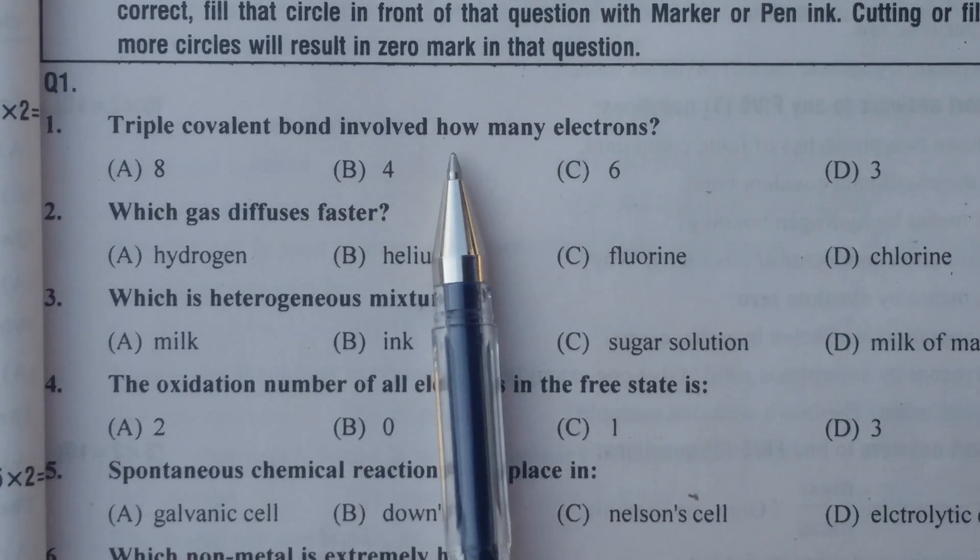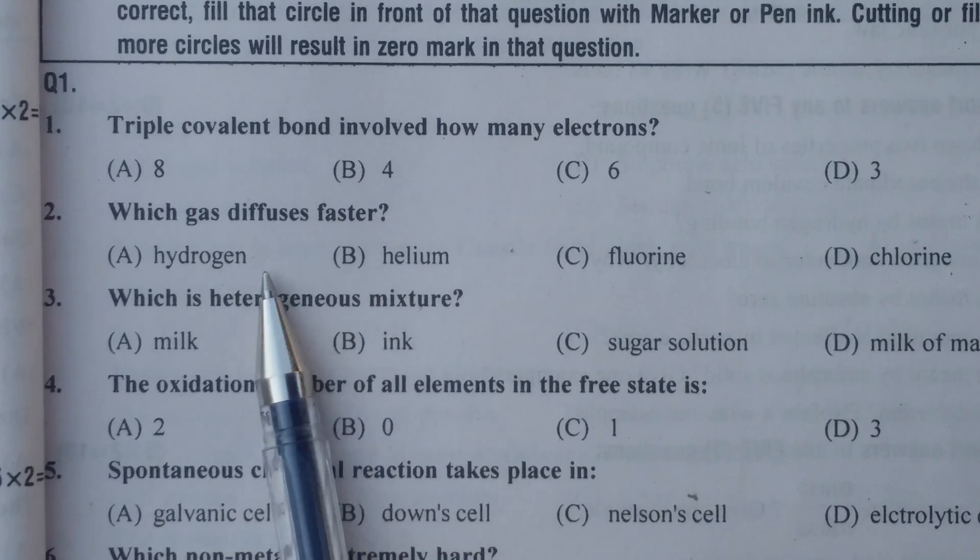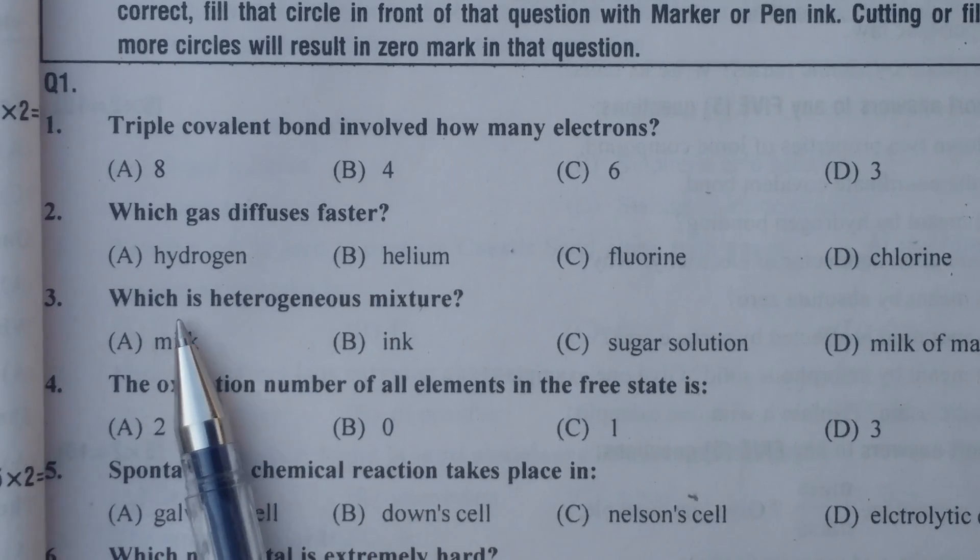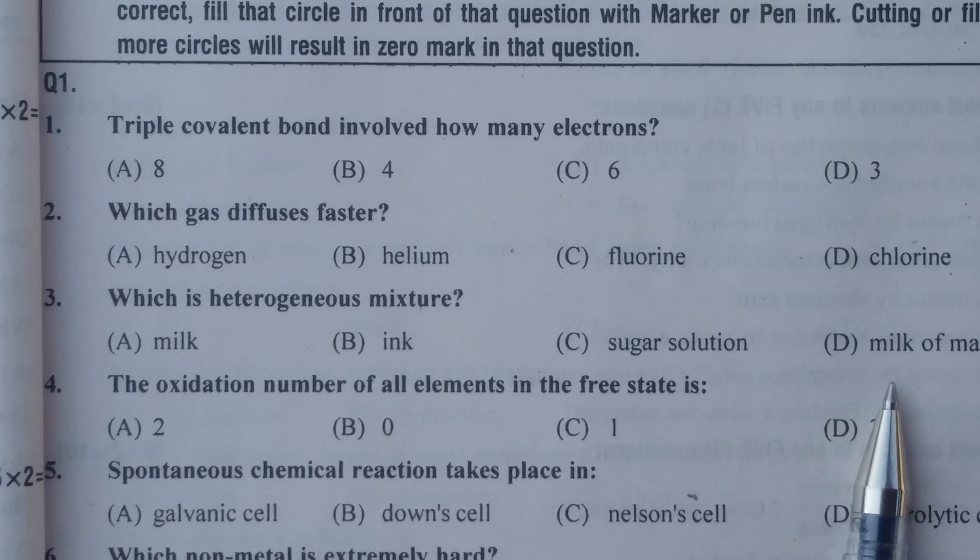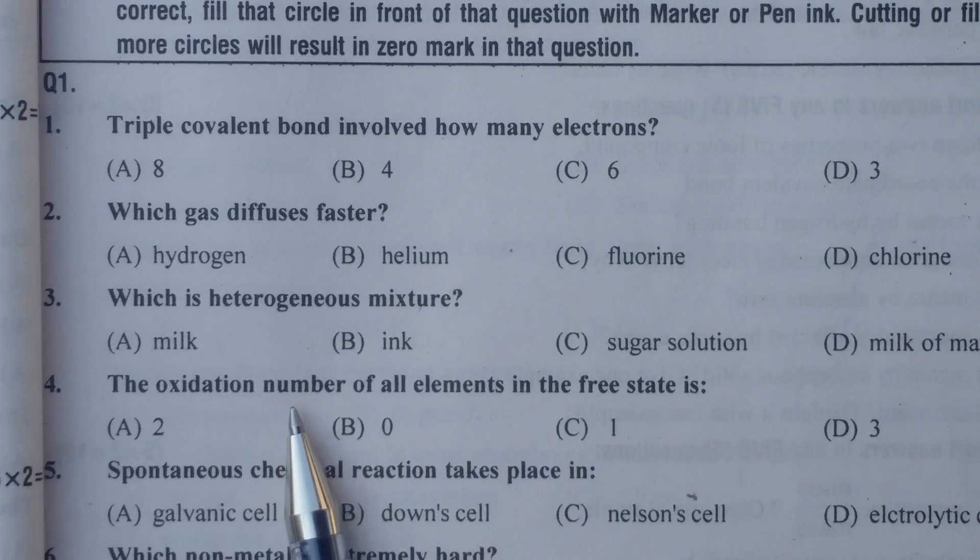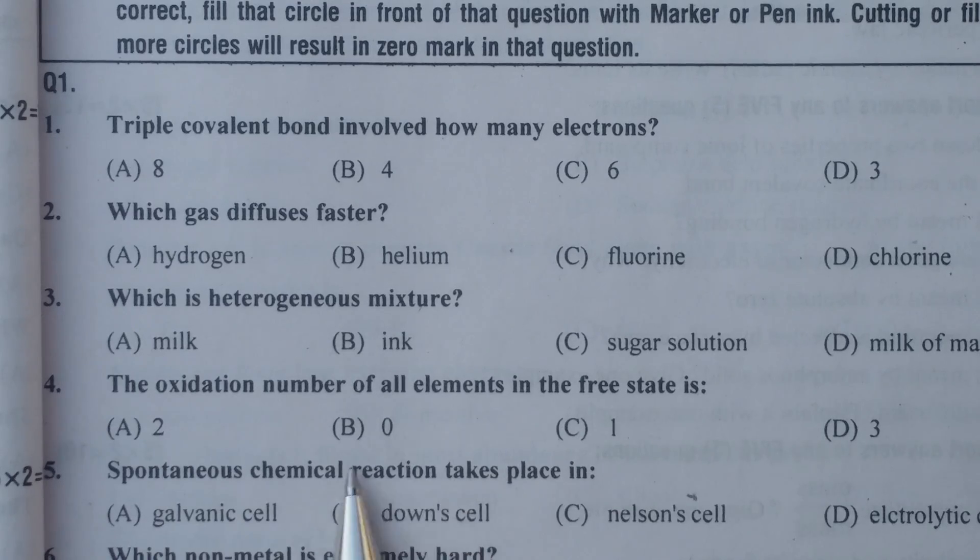Triple covalent bond involves how many electrons? Six electrons. Which gas diffuses faster? Hydrogen. Which is heterogeneous mixture? Milk of magnesia. The oxidation number of all elements in the free state is zero.